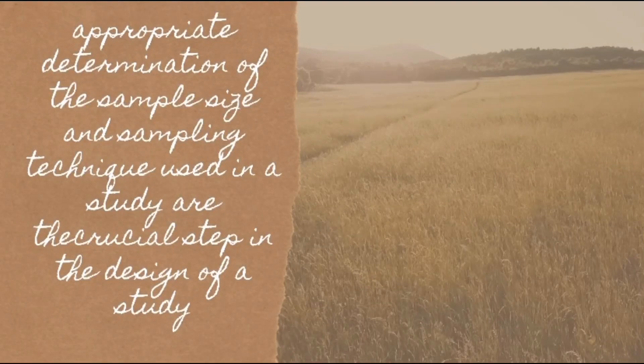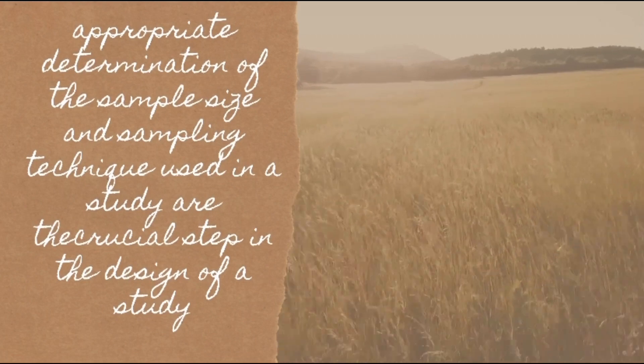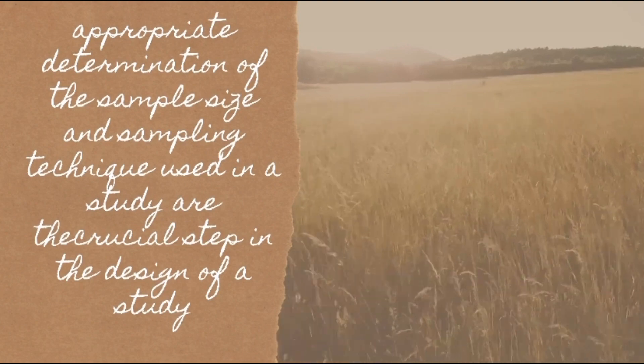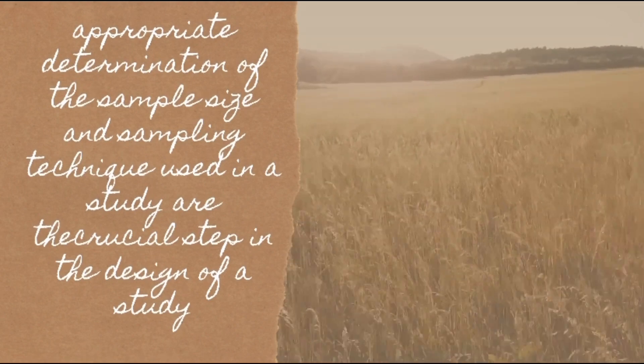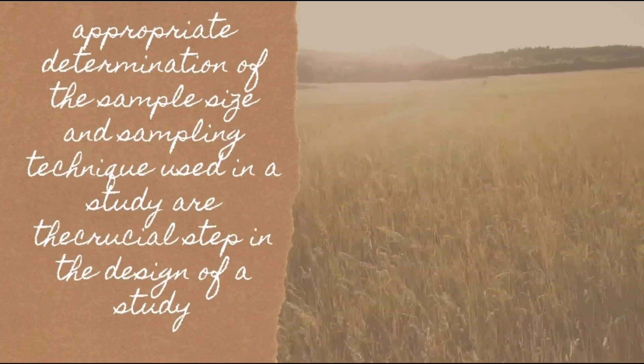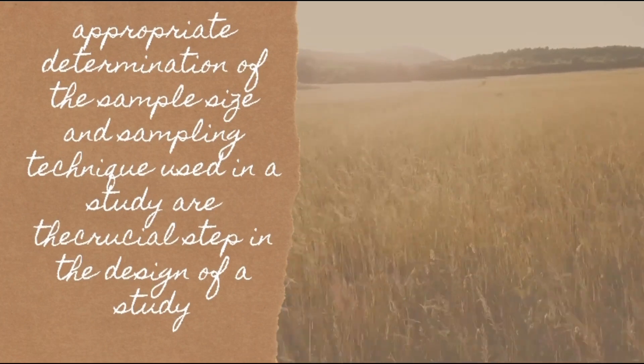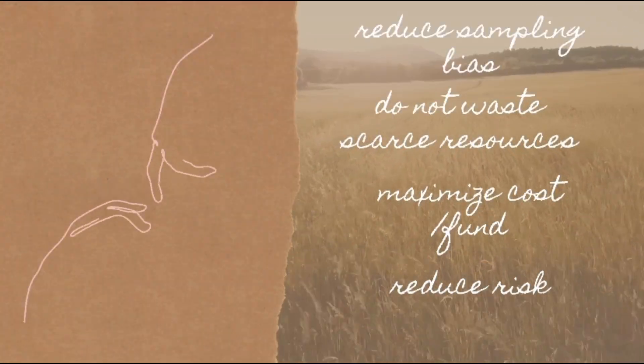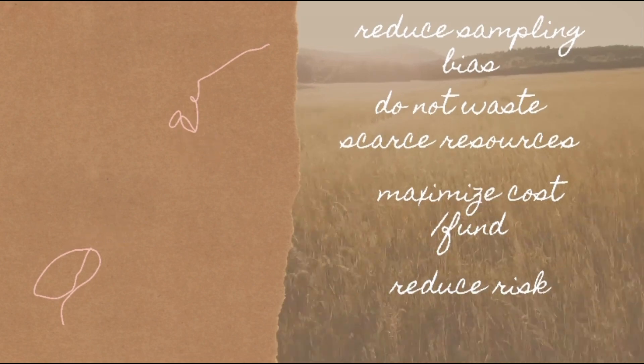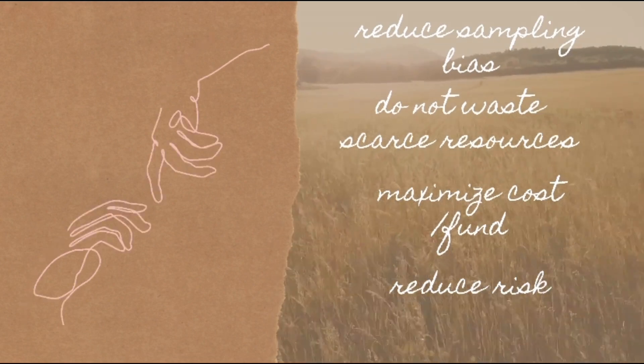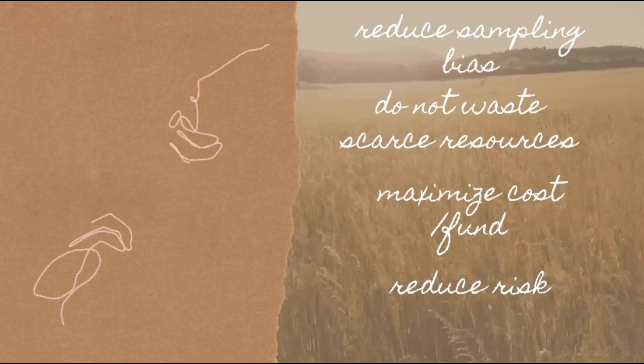Appropriate determination of sample size and sampling techniques used in a study are the crucial step in the design of a study. To sum it up, knowing the right number of samples and sampling technique, the estimation is more precise and the study may produce more accurate results. Sample size and technique have significant impact on the quality of findings. Small or excessively large sample sizes potentially lead to incorrect findings. The correct calculation of sample size and choosing the right technique: one, it may reduce sampling bias; two, it does not waste resources; three, you can maximize the cost and benefits; and last, you may reduce harmful effects or risks to participants, specifically when conducting experimental studies.